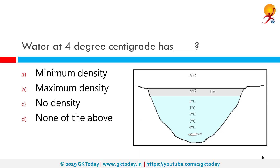Water at 4 degrees Celsius has maximum density, and this is called the anomalous expansion of water. It is an abnormal property of water whereby it expands instead of contracting when the temperature goes from 4 degrees Celsius to 0 degrees Celsius, and it becomes less dense.